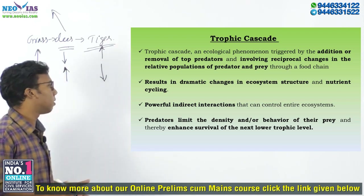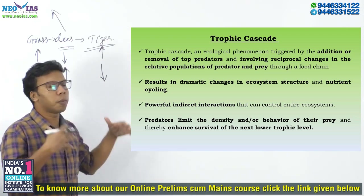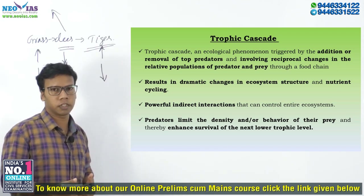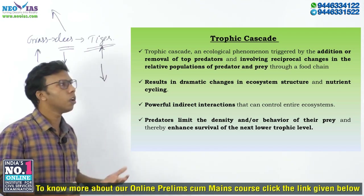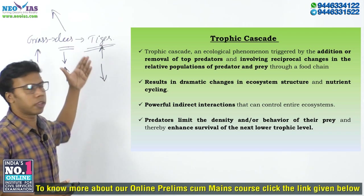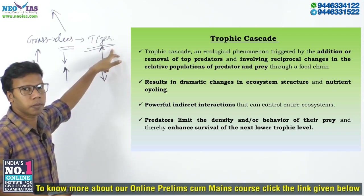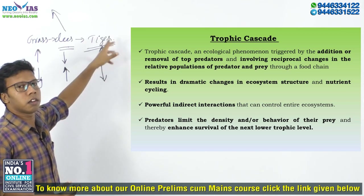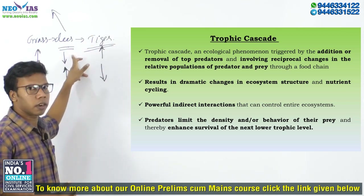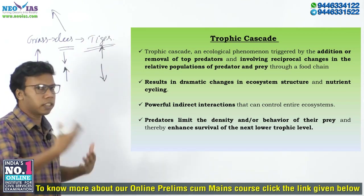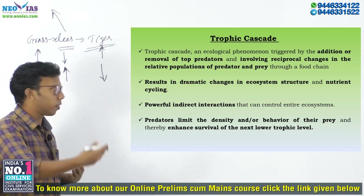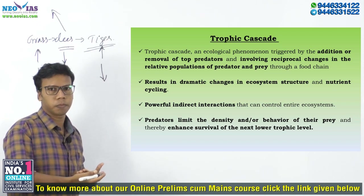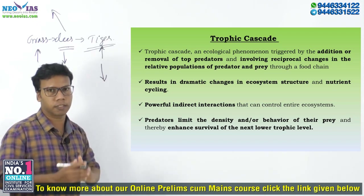Trophic Cascade is the change in an ecosystem when one component of a food chain is removed or added due to some factors. Those factors may be due to environmental changes, due to the fear of a predator, or the predator may directly consume the prey. Whatever the cause, the addition or removal of a species in a food chain will result in changes in the ecosystem, and that is called Trophic Cascade.